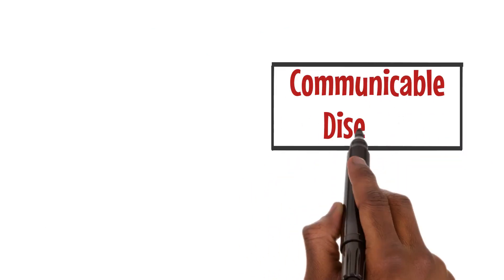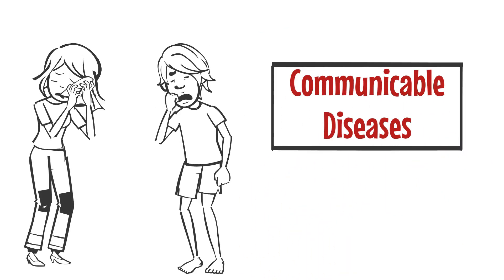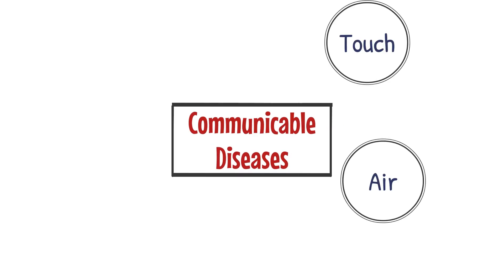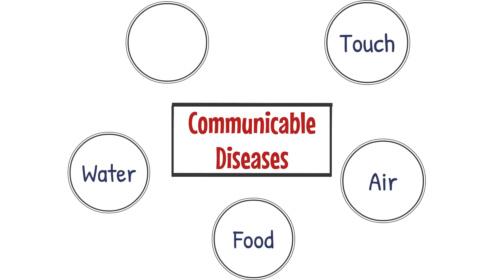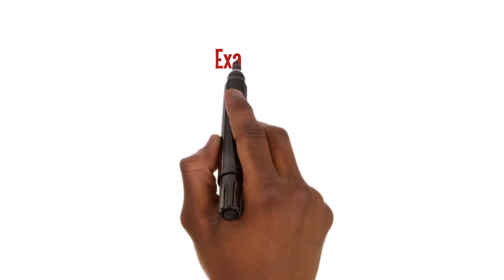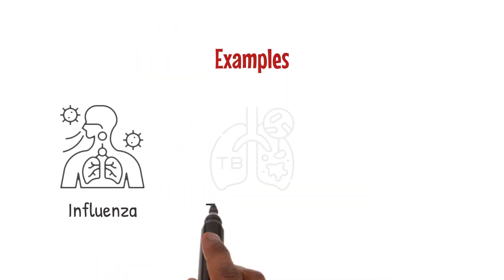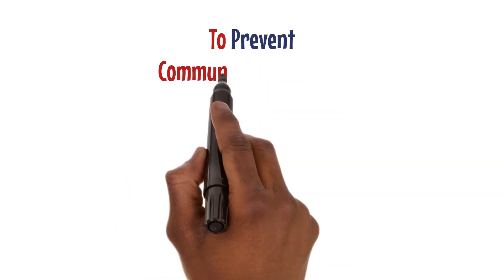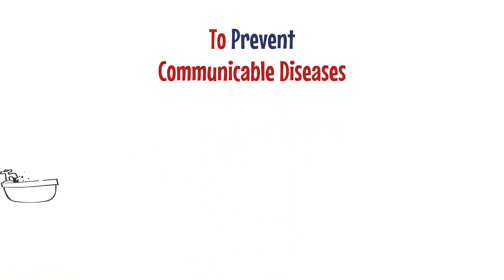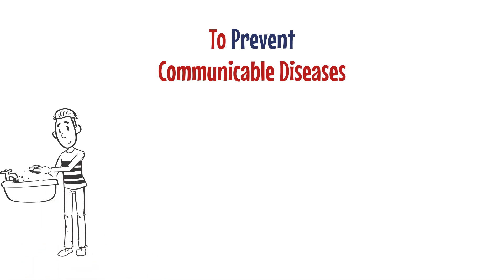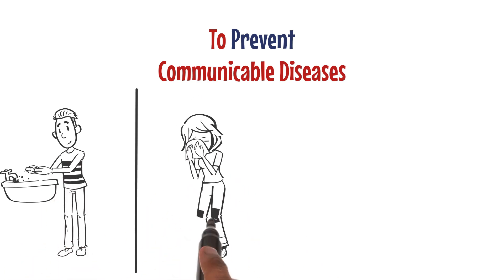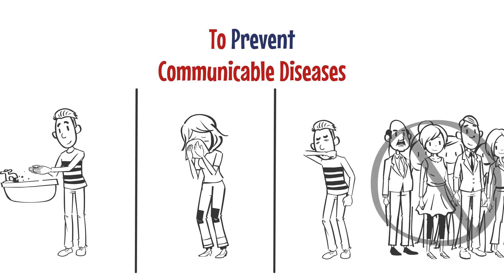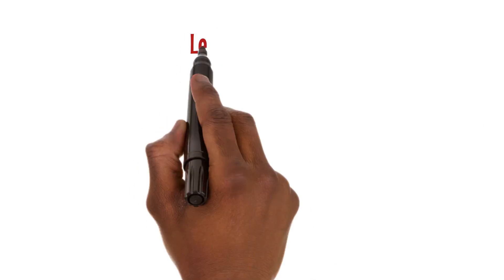Communicable diseases are contagious and can spread from person to person. They can be transmitted through touch, air, food, water, or even sexual contact. Examples include influenza, tuberculosis, and HIV/AIDS. To prevent communicable diseases, maintain good hygiene, wash your hands, cover your mouth when you cough or sneeze, and avoid crowded places during outbreaks.